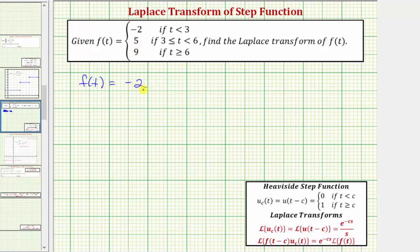Notice how to go from negative two to positive five, we'd have to add seven. So we want to add seven to this function value as soon as t reaches positive three. So we can say plus seven times u sub three of t. u sub three of t equals one when t is greater than or equal to three, and zero when t is less than three.